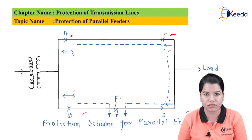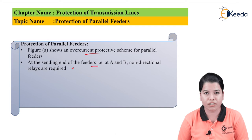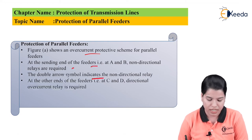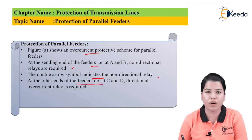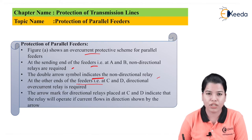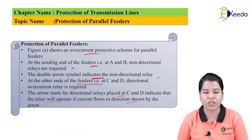Now let us see the working. At the sending end of the feeder, that is at A and B, the non-directional relays are required. The double arrow symbol indicates the non-directional relay. At the other end, that is at sections C and D, the directional overcurrent relay is required, indicated by the single direction arrow. The arrow mark for the directional relay at C and D indicates the relay will operate only if the current flows in the direction shown by the arrow; otherwise, the relay will remain inoperative.